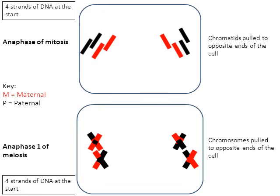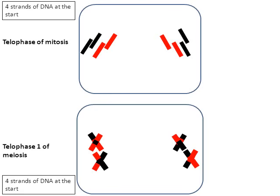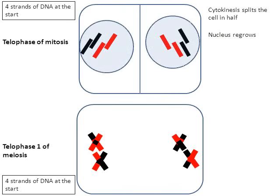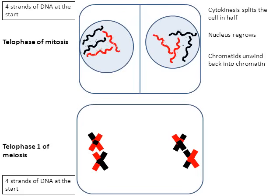Moving into telophase: the process known as cytokinesis is going to start to split the cytoplasm of the cell and the two cells are going to split in half. Sometimes cytokinesis starts during anaphase, but telophase is the final step of mitosis. Cytokinesis splits the one cell into two when the cytoplasm divides. The nucleus is going to regrow, offering protection for the DNA inside. Finally, those four chromatids are going to unwind back into the linear strands of chromatin, very similar to how we started this video. That's the end result of mitosis.